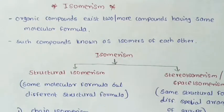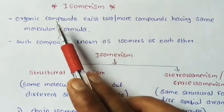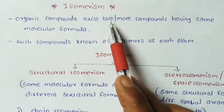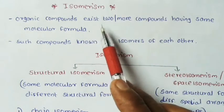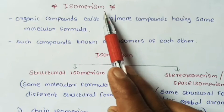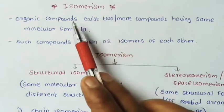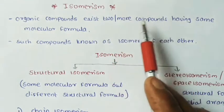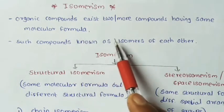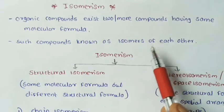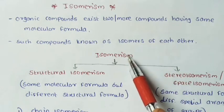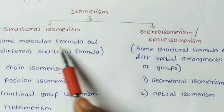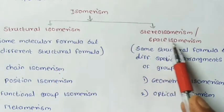Good morning students. Today we will study basic principles of organic chemistry, specifically the chapter on isomerism. When organic compounds exist as two or more compounds having the same molecular formula, it is called isomerism, and such compounds are known as isomers of each other. Isomerism is of two types: one is structural isomerism and the second is stereo, that is, space isomerism.